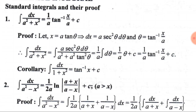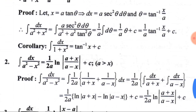The second integral is ∫dx/(a² − x²) = (1/2a)·ln|(a+x)/(a−x)| + C, where a is greater than x and C is the integral constant.